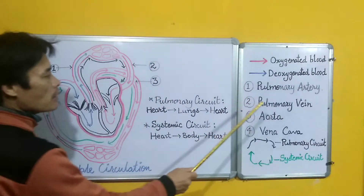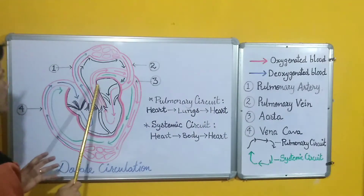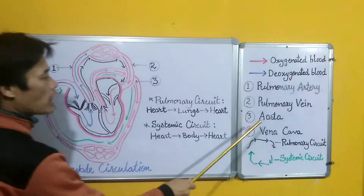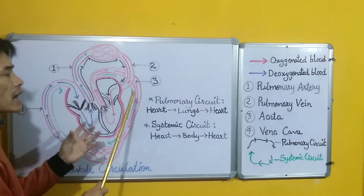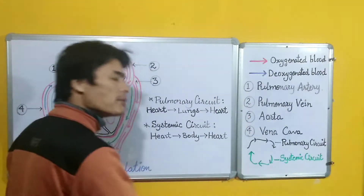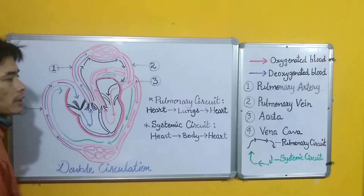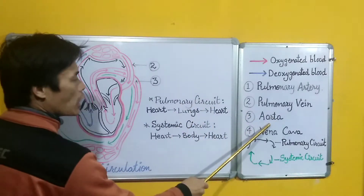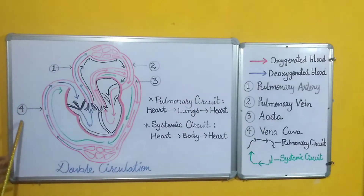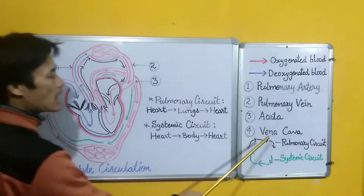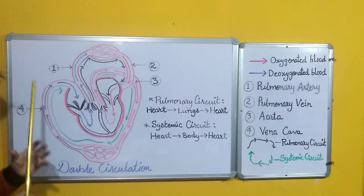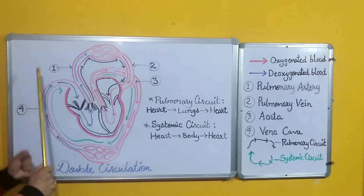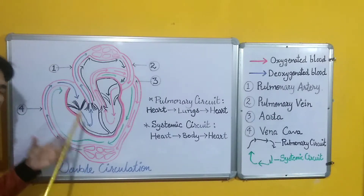Number three is the aorta. The aorta is a major blood vessel that comes out of the heart and takes blood to the different parts of the body. Number four is the vena cava. This blood vessel brings blood from the different parts of the body and drains it into the heart.